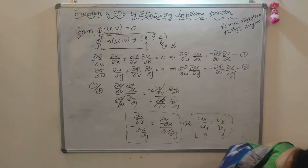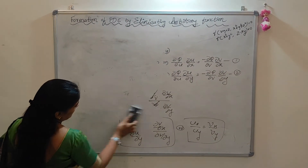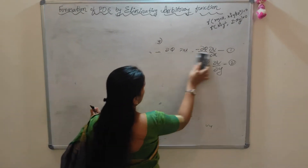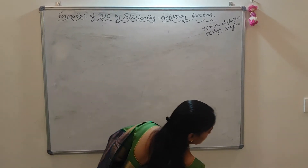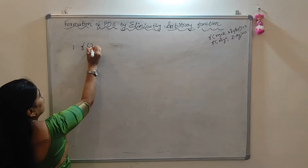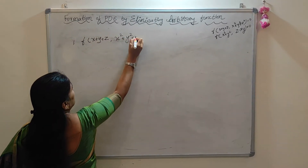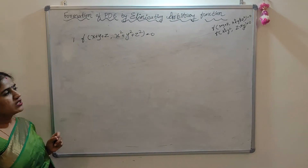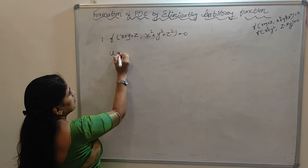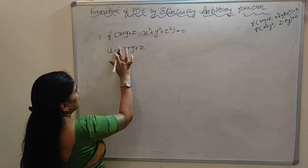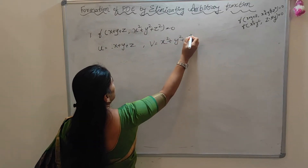Now I will solve the first problem. Formation of PDE by eliminating the arbitrary function: f(x+y+z, x²+y²+z²) = 0. We observe this is of the form φ(u, v) = 0. So we take u = x+y+z and v = x²+y²+z².